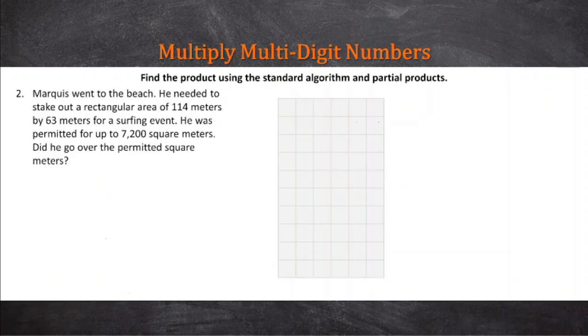Let's read this. I recommend you read it three times or more so you can have an understanding. Marquis went to the beach. He needed to stake out a rectangular area of 114 meters by 63 meters for a surfing event. He was permitted for up to 7,200 square meters. Did he go over the permitted square meters? That's a statement, not giving us information. He needed to stake out a rectangular area of 114 meters by, and that usually means times, 63 meters for a surfing event. He was permitted for up to 7,200 square meters. Did he go over? I'm going to box this out because this is what we're trying to find. Did he go over, yes or no?